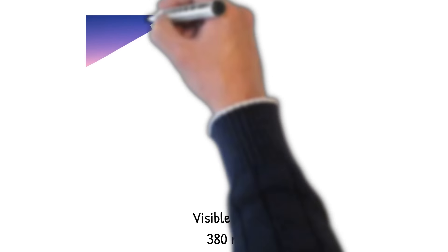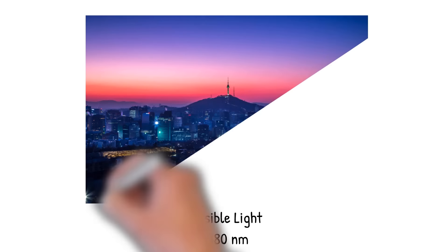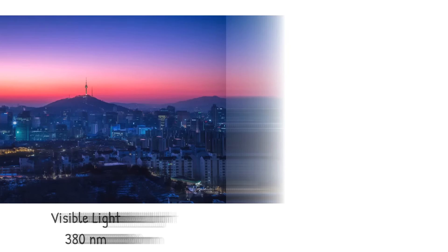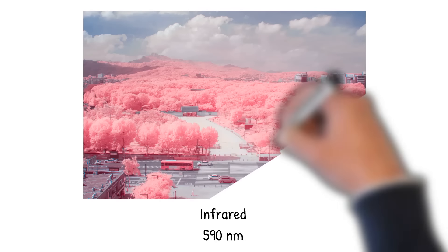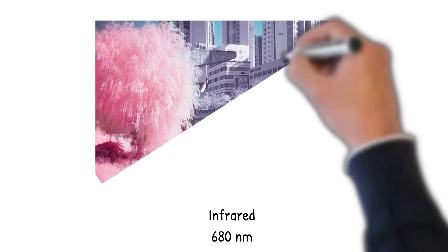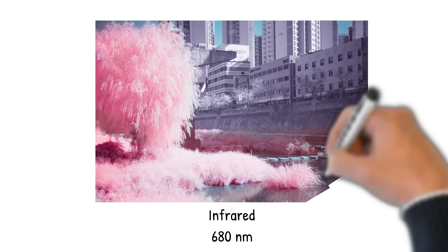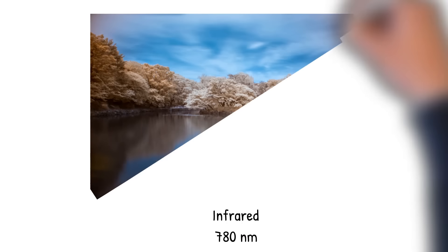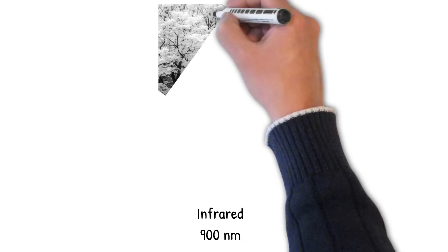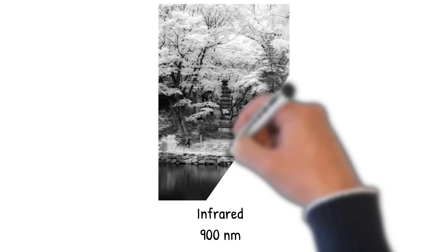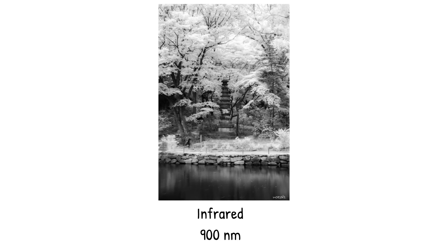Here we have a picture taken at 380 nanometers — complete visible light. Next is an infrared picture shot at 590 nanometers, which is quite colorful. Then a picture at 680 nanometers — still a little colorful but starting to lose color. Finally, a picture shot at 780 nanometers with the Hoya R72 — getting quite desaturated. Once you get to 900 nanometers, you're shooting complete black and white infrared.